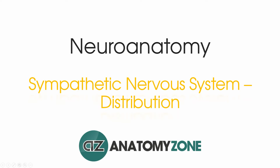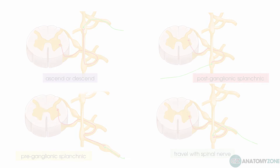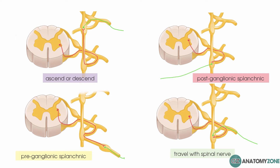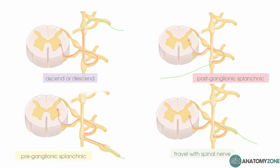Hi, this is Peter from AnatomyZone and in this tutorial we will take a look at the distribution of the sympathetic nervous system. In the previous part of this tutorial, we looked at the basic structure of the sympathetic nervous system and the different configurations of the pre and post ganglionic fibres. Now I'd like to take a look at examples of these different paths that the sympathetic fibres can take in the body.